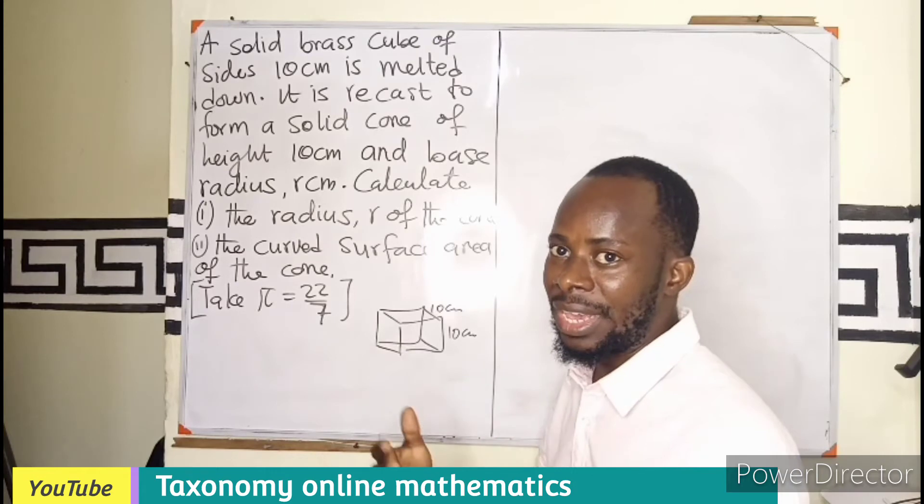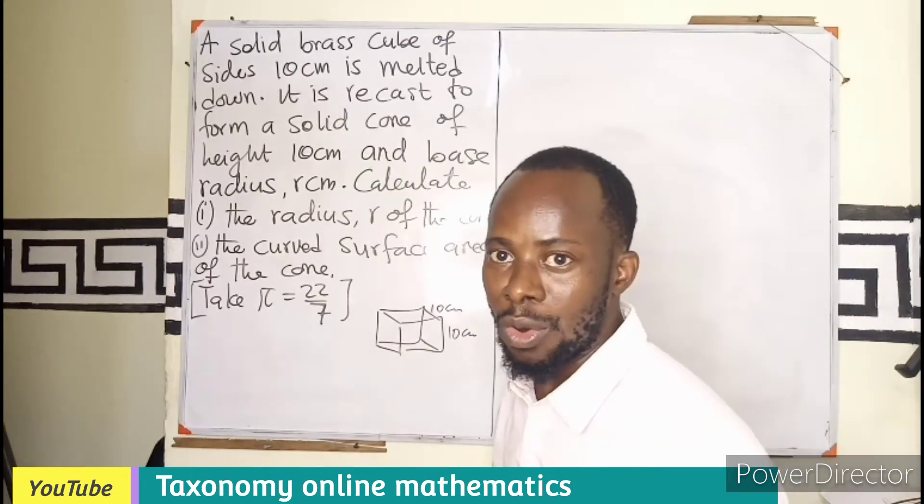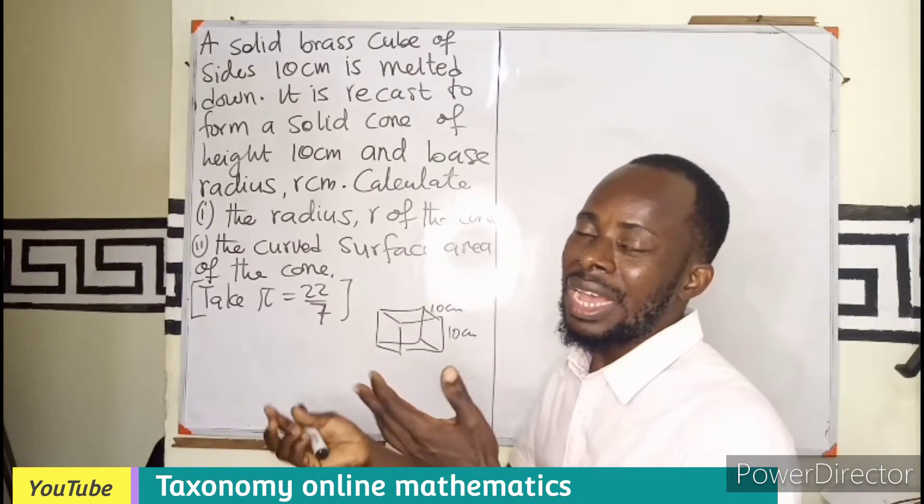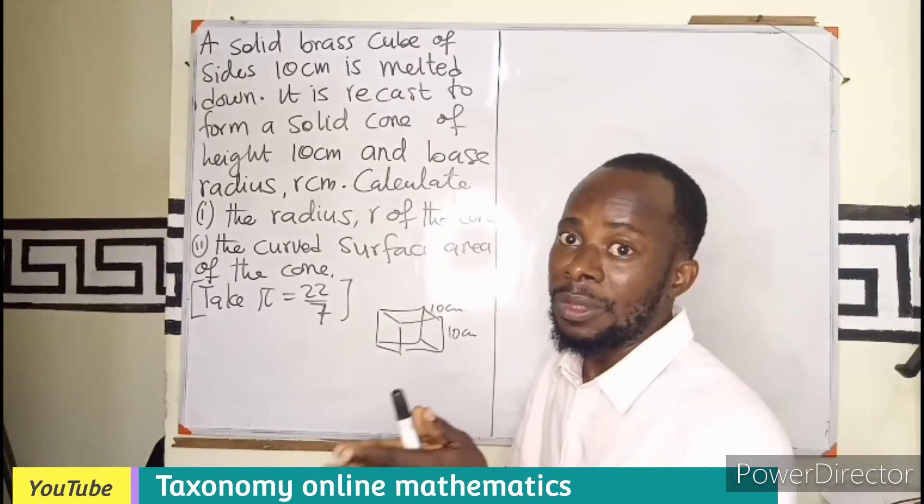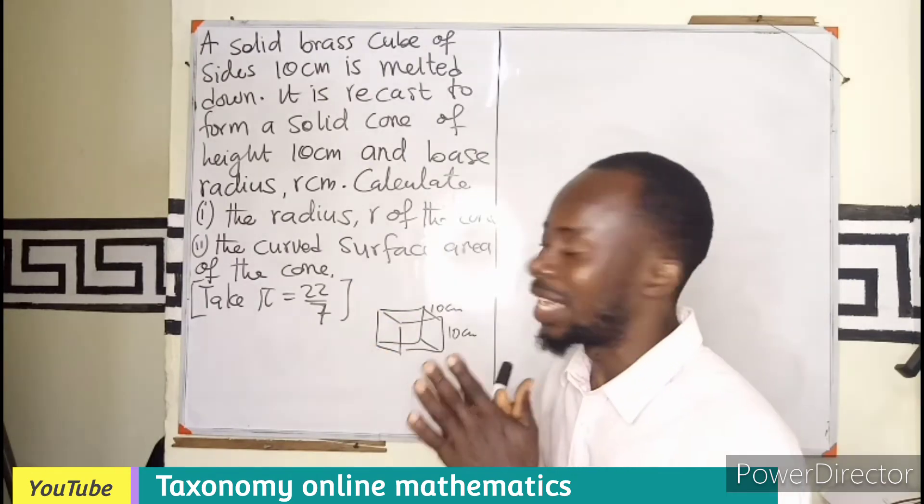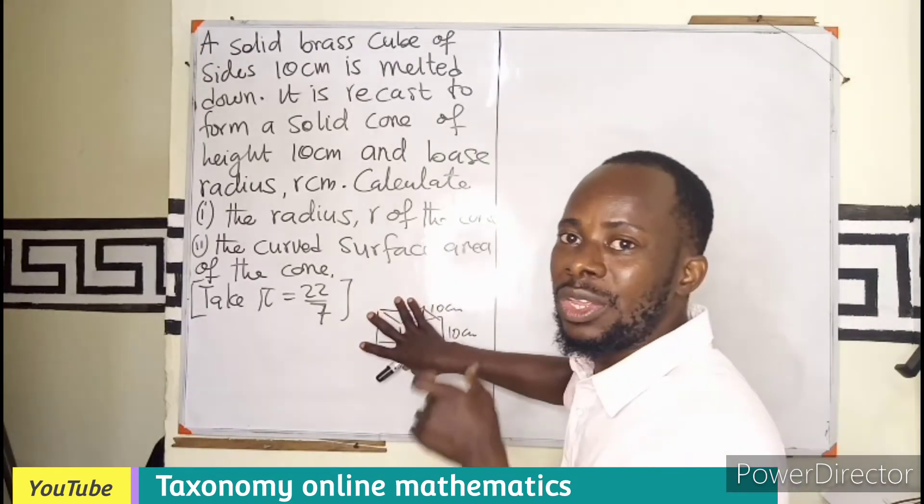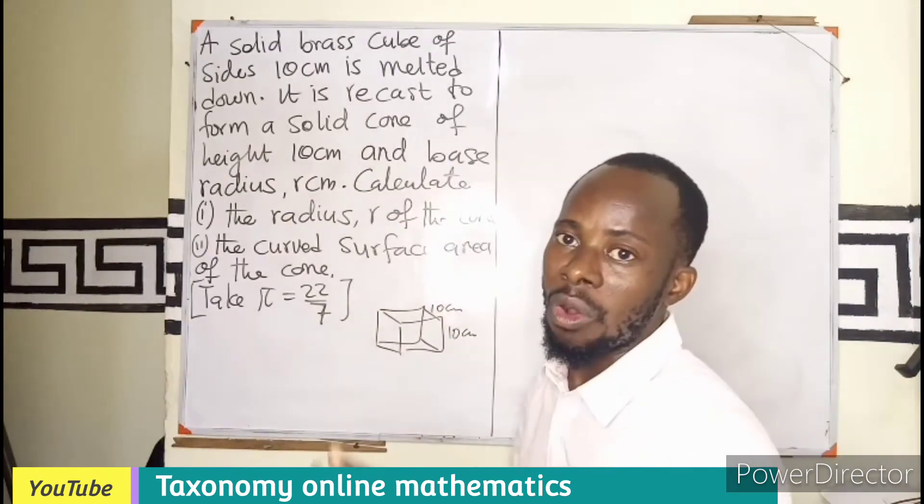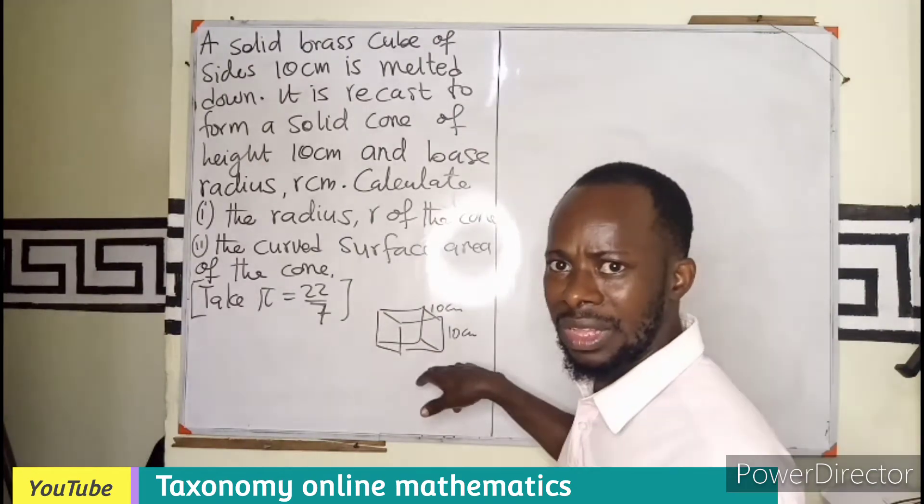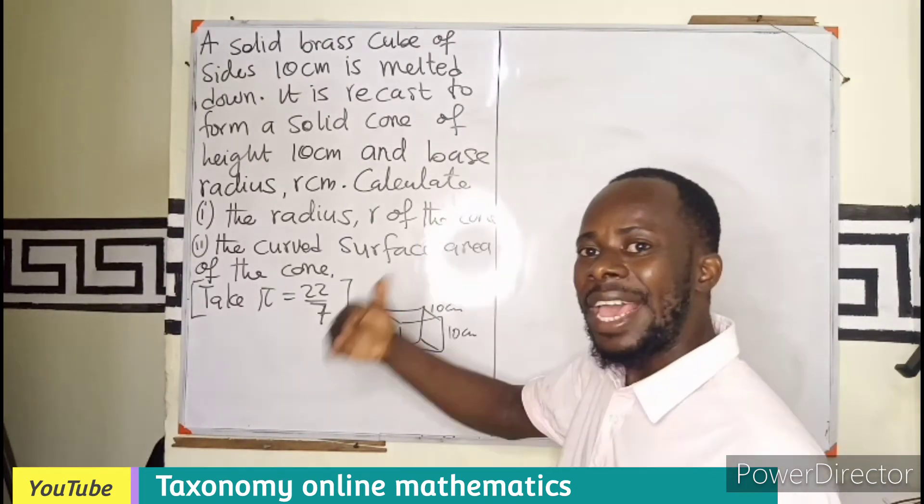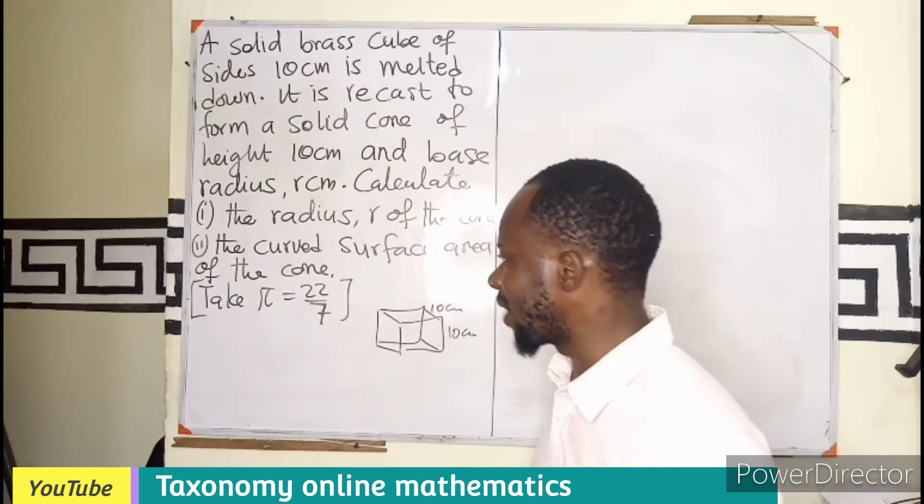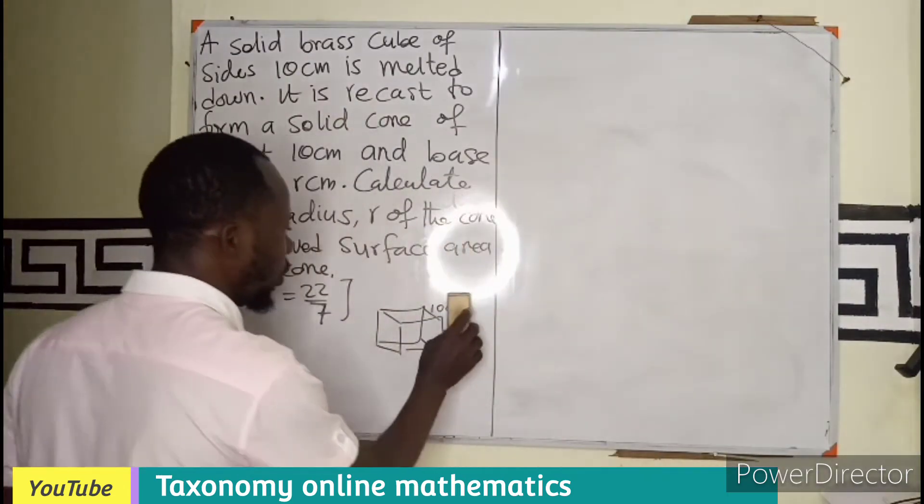It means the volume of that cube of sugar is being the same as it is being melted to form a cone. Those who are making coconut toffee know that when you melt the sugar, it is added to the coconut water to make a toffee. The volume of your sugar determines the quantity of toffees you get. So that simply means that the volume of the cube is the same as the volume of the new cone being formed.